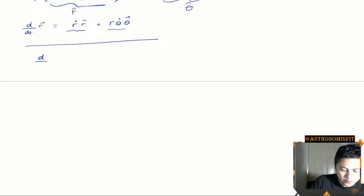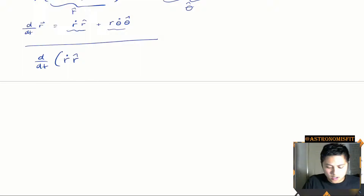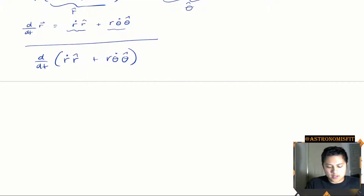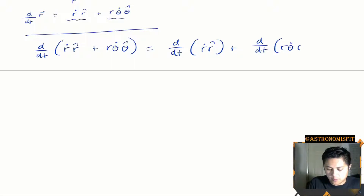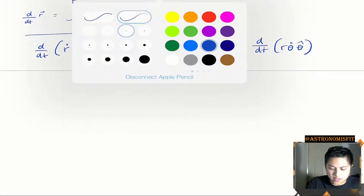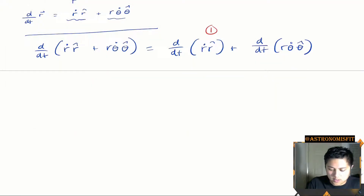Let's take the time derivative of the line we just finished with. So we have the time derivative of r-dot times r-hat plus r times theta-dot times theta-hat. We're going to break this up into two separate derivatives: the time derivative of the first term plus the time derivative of the second term. I'm going to label these one and two and focus on each one independently.